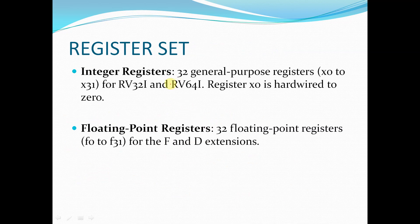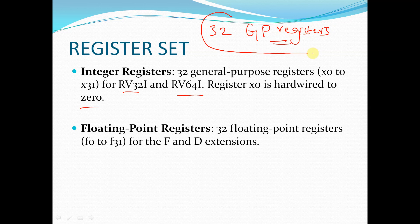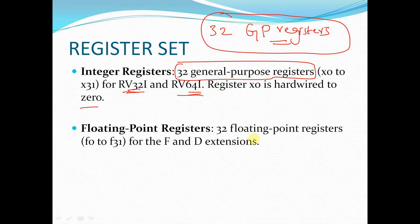For register sets, RISC-V has 32 general-purpose registers, X0 to X31, for both RV32I and RV64I. Register X0 is hardwired to zero. Regardless of whether it is 32-bit, 64-bit, or 128-bit architecture, the total number of general-purpose registers is always 32. There are also 32 floating-point registers, accessible when the F and D extensions are added.